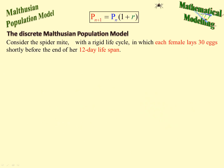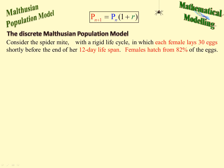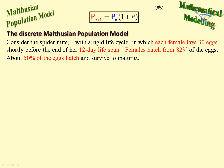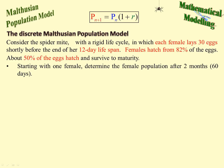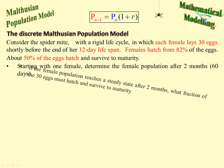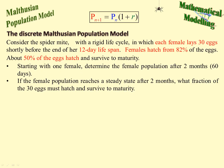Now we're looking at a spider mite with a rigid 12-day lifespan. At the end of 12 days, the female spider mite dies, having laid 30 eggs shortly before the end. Females hatch from 82% of the eggs, and 50% of the eggs hatch and survive to maturity. Starting with one female, determine the female population after 2 months — 60 days, that is 5 lifespans. Then, if the female population reaches a steady state after 2 months, what fraction of the 30 eggs must hatch and survive to maturity?